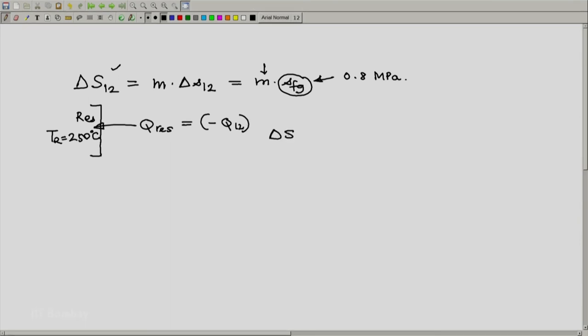Hence delta S reservoir, delta S will be heat absorbed by the reservoir divided by T reservoir which will be minus Q12 divided by T reservoir. Remember that this is already obtained whereas T reservoir substitute in Kelvin. That gives us delta S.